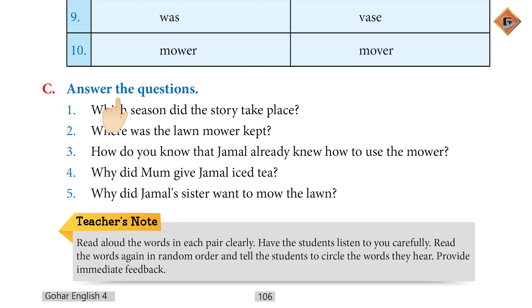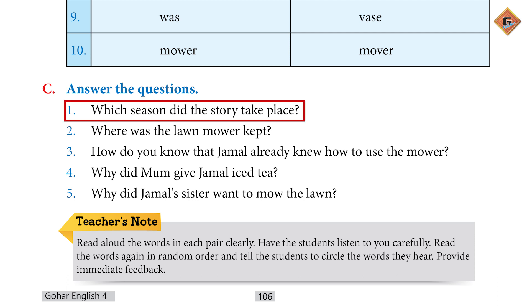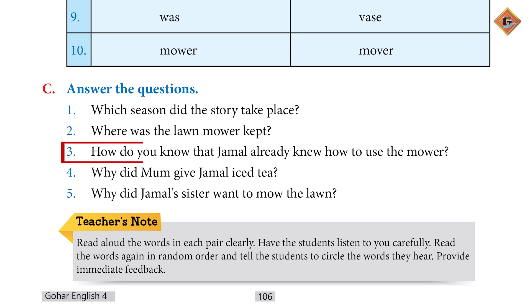Question C: Answer the following questions. For these questions, pause the video, go and read the text — that is, read your story — and then provide the answers. Question 1: Which season did the story take place? The story took place in the summer season. Question 2: Where was the lawnmower kept? The lawnmower was kept in the garage.